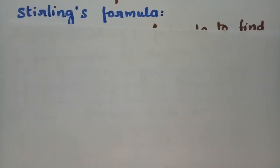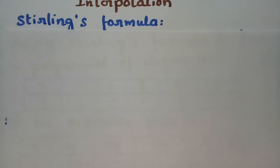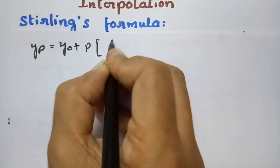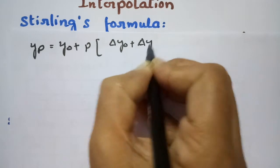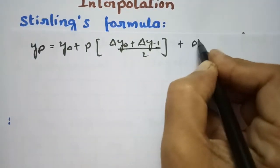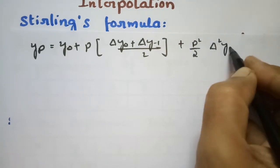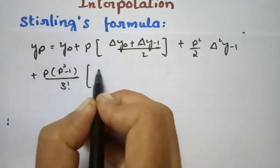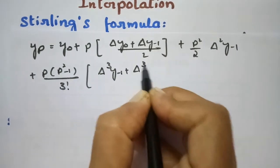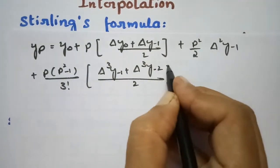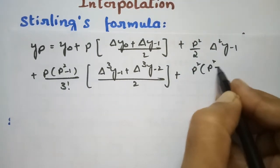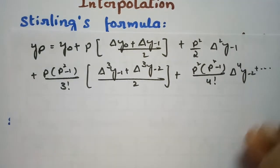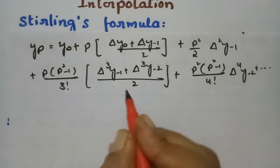According to the Stirling's formula, we have yp equals y naught plus p times of delta y naught plus delta y minus 1 divided by 2, plus p squared by 2 into delta squared y minus 1, plus p times p squared minus 1 by 3 factorial into delta cube y minus 1 plus delta cube y minus 2 divided by 2, plus p squared into p squared minus 1 by 4 factorial into delta power 4 y minus 2, and so on. We have to put all these values here to get the polynomial.